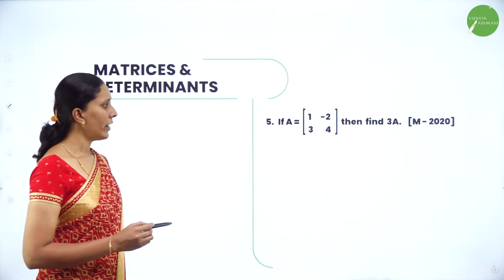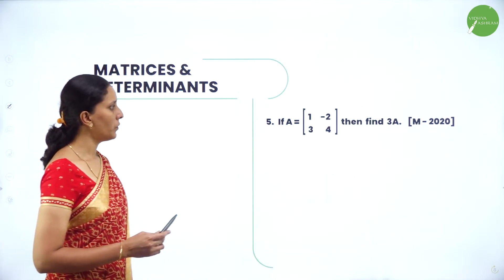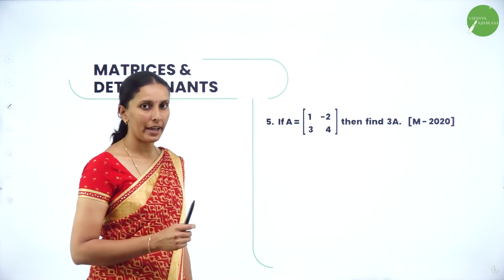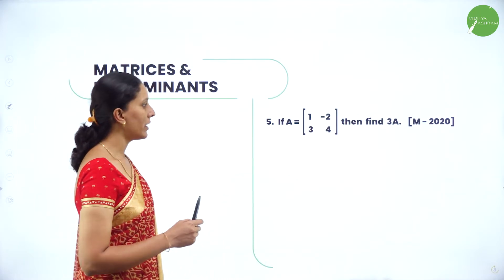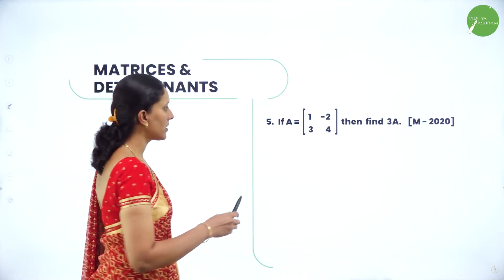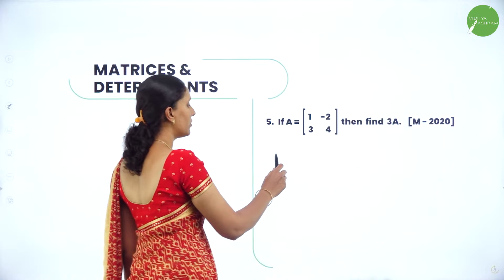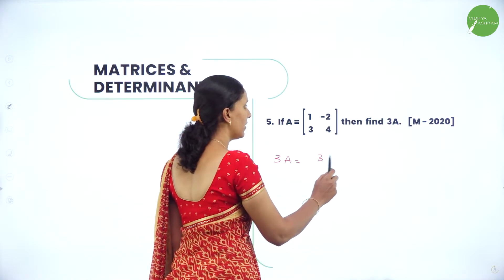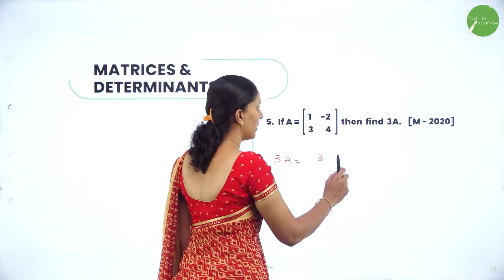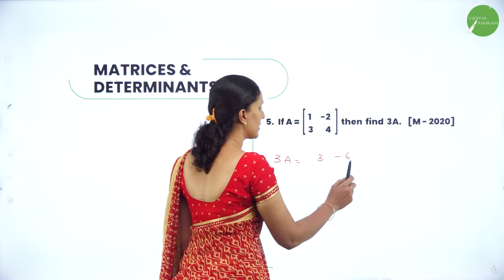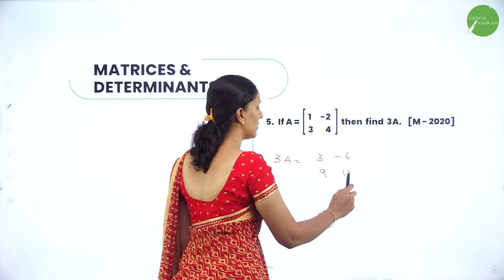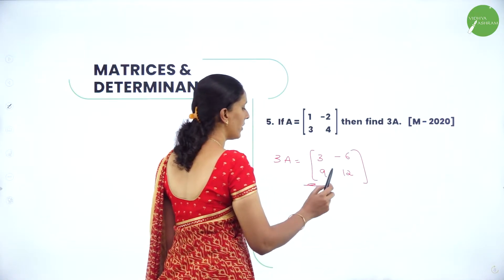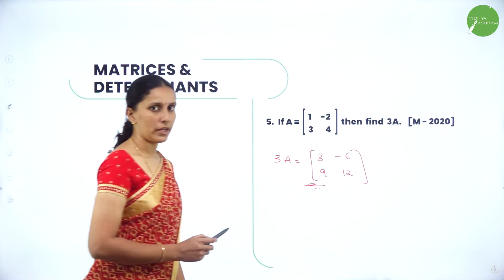Next, if A equals [1, -2; 3, 4], find 3A. Simply multiply 3 to the given matrix, giving 3A = [3, -6; 9, 12]. This is the new matrix obtained.